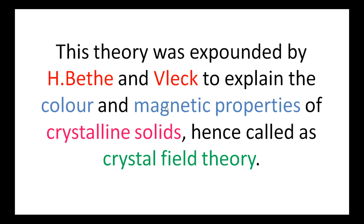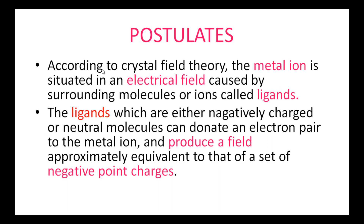This theory mainly explains the color and magnetic properties of coordination compounds. The main postulates of this theory are as follows. First postulate: According to Crystal Field Theory, the metal ion is situated in an electric field caused by surrounding molecules or ions called ligands. The ligands, which are either negatively charged or neutral molecules, can donate an electron pair to the metal ion and produce a field approximately equivalent to that of a set of negative point charges. Metals are generally electropositive, so there is an electrostatic force of attraction, and the bond between metal and ligand is 100% ionic.